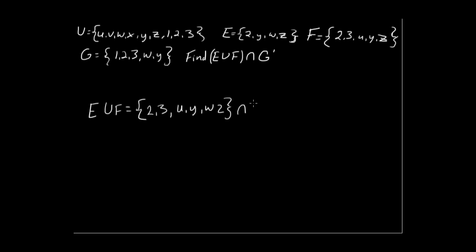Well, let's first identify what G complement consists of. Okay, so we'll have G complement is everything not in G, and everything not in G is basically everything in the universal set up here that is not in G.